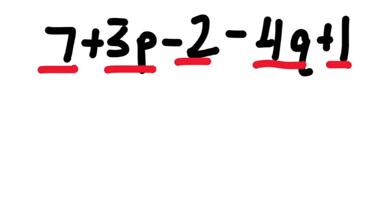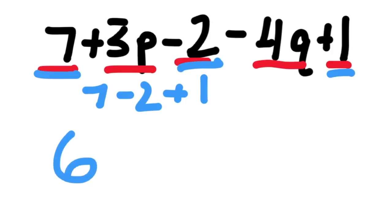All right, the first term is 7, and it has no variable, so it goes with all the other terms that have no variables: the -2 and the +1. So 7 - 2 + 1 is 6.